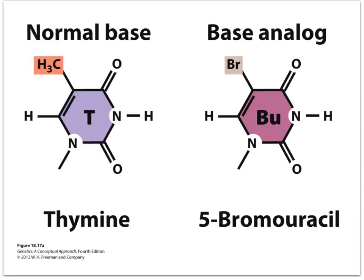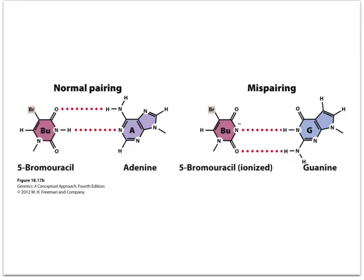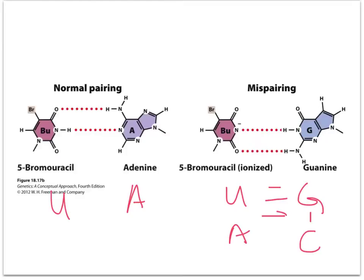Any base analog is something added to it — in this case, a methyl group replaced by a bromo group. Thymine becomes 5-bromouracil. Normal base pairing occurs between U and A, but when ionized, it can also cause mispairing between U and G. That would not look like a mistake, but it would be a mutation, and upon rounds of replication, this G is going to go to C, and so it becomes a UA that goes to a GC.